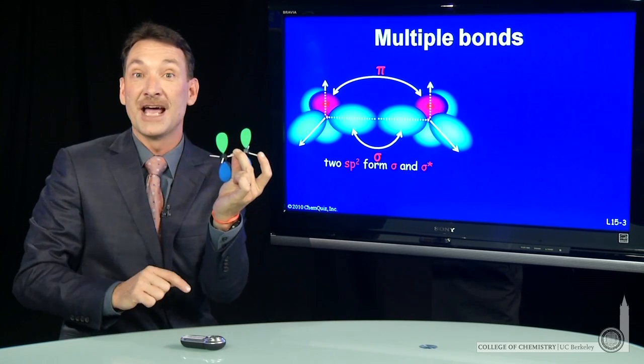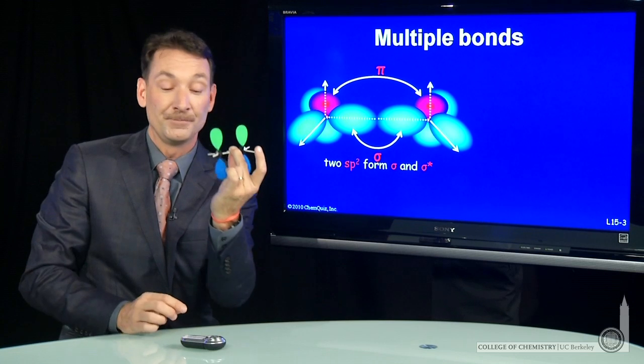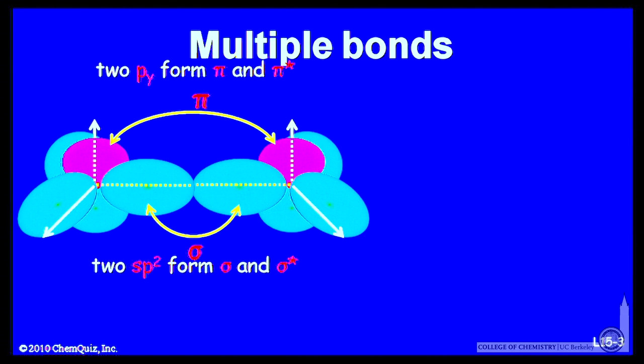The first bond formed between atoms is always sigma. Other bonds are pi. So this pi bond will be formed from py orbitals, and I'll form a pi bonding and antibonding.